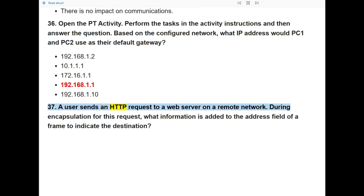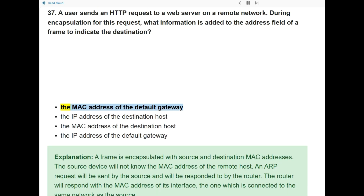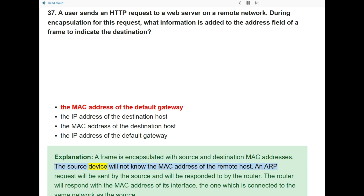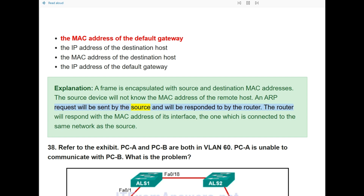Question 37: What is added to the address field of a frame to indicate the destination? The answer is: the MAC address of the default gateway. A frame is encapsulated with source and destination MAC addresses. The source device does not know the MAC address of the remote host, so an ARP request is sent. The router responds with the MAC address of its interface connected to the same network as the source.